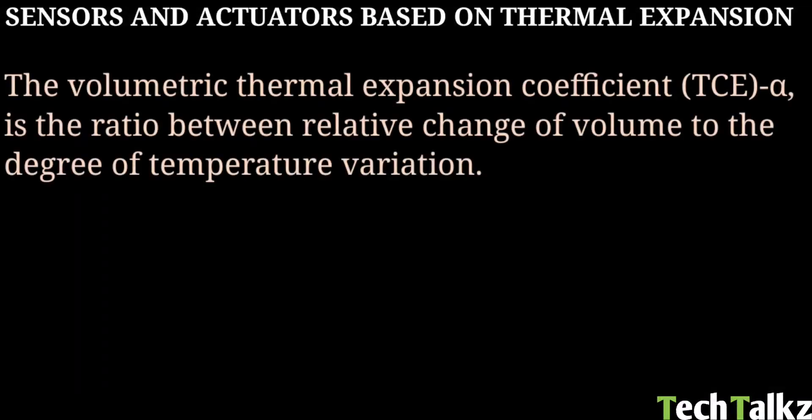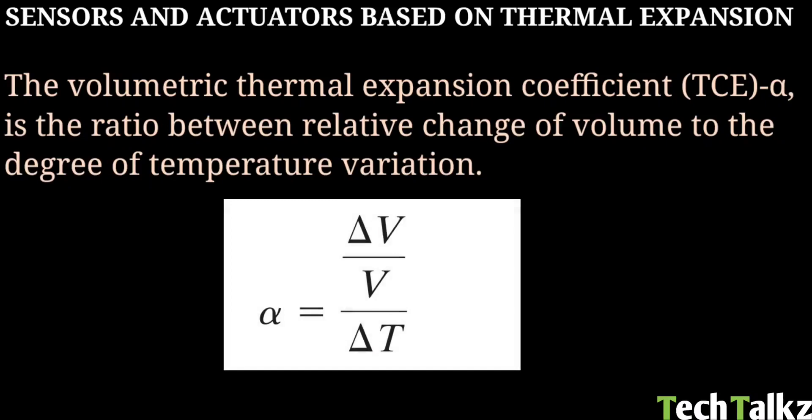Next, sensors and actuators based on thermal expansion. MEMS use semiconductors, metals, and dielectric materials. When the temperature increases, the dimensions will change. With these materials, there is a thermal expansion coefficient, commonly denoted as alpha. It is the volumetric thermal expansion coefficient or TCE. It is the ratio between relative change of volume to the degree of temperature variation.